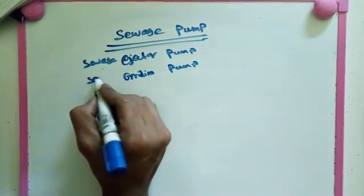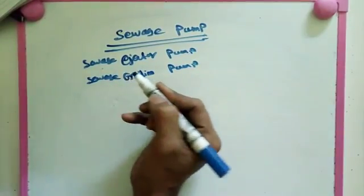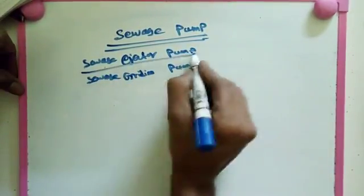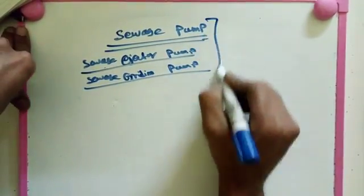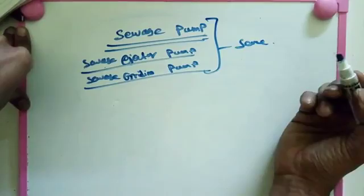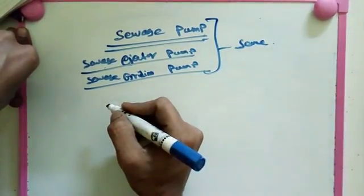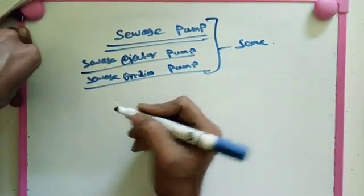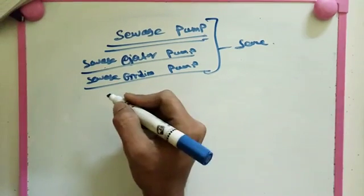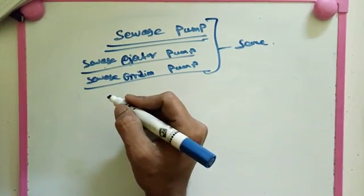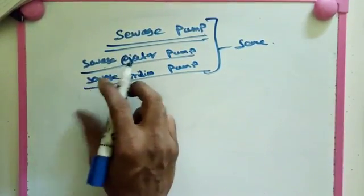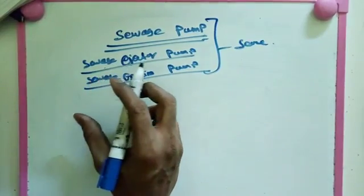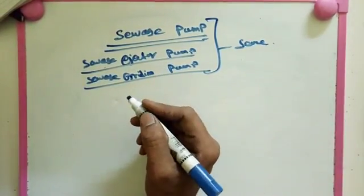Sewage exciter pump, sewage grinding pump - we call it different names in different places. These are all the same, different names for sewage pump. Now I'm telling what is meant by sewage pump. Actually, most of the cases we flow the liquids by using gravity. Some special cases we didn't do anything like this.